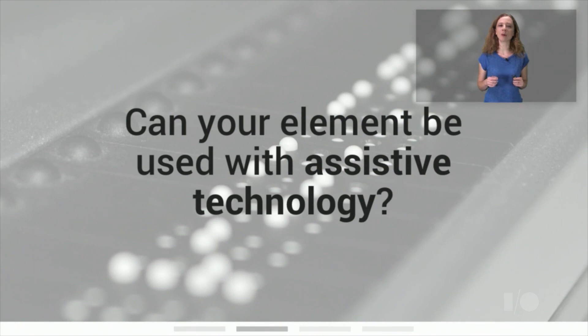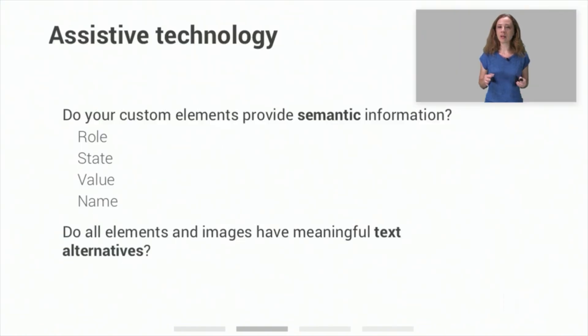Once our keyboard interactions are working, we're a good part of the way there already. Next, we need to take a look at whether our element can be used with assistive technology. The types of users who would use assistive technology range from users with visual impairments who might use screen readers or braille displays, to users with cognitive impairments, such as dyslexia, who might use a screen reader to augment their reading ability, and users with motor impairments who need to use technologies like voice control to interact with their devices. There are really only two parts to ensuring that your element can be used with assistive technology, including screen readers, once you've addressed keyboard accessibility. Adding semantic information, including the element's role, state, value, and name, and making sure that all information conveyed visually has a text alternative.